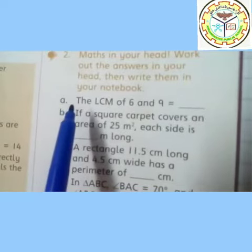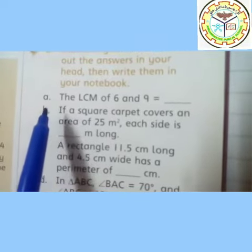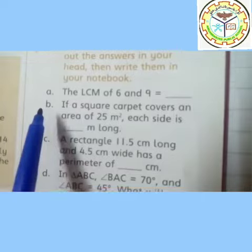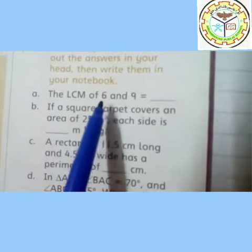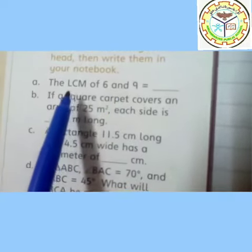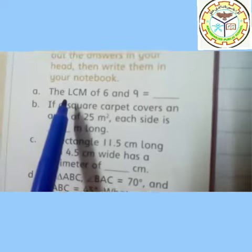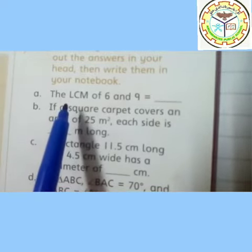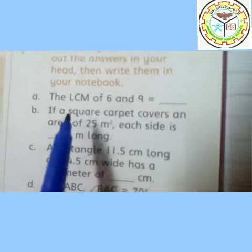These are questions you can solve. In your previous classes you have done all these questions. Our part A is: the LCM of 6 and 9. LCM you have studied in previous classes. How we can solve LCM of 6 and 9?